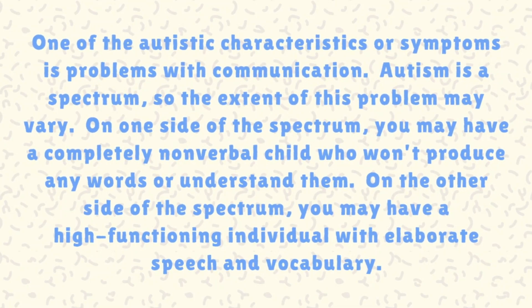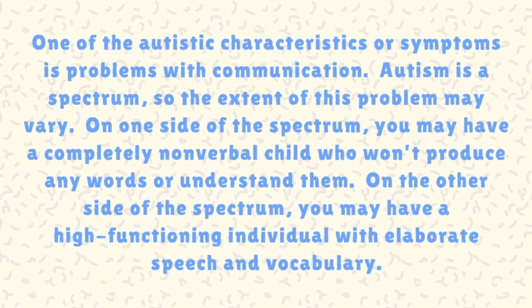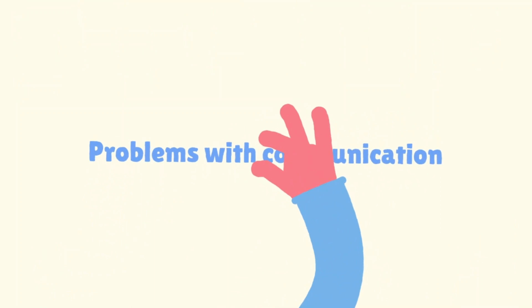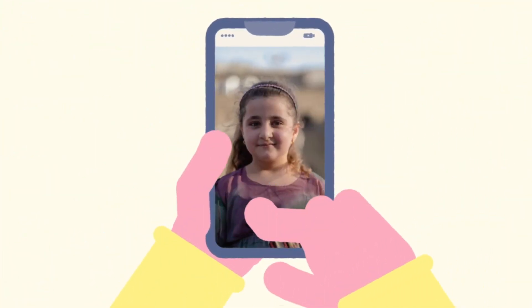One of the autistic characteristics or symptoms is problems with communication. Autism is a spectrum, so the extent of this problem may vary. On one side of the spectrum you may have a completely non-verbal child who won't produce any words or understand them. On the other side you may have a high-functioning individual with elaborate speech and vocabulary, who may still struggle with understanding and taking turns in a conversation.